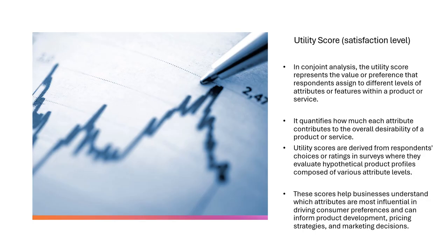We need to understand the concept of utility score. The weightage that customers have given will come out as a satisfaction level. In conjoint analysis, analysts calculate a utility score — the value of preference that a respondent has assigned to a different level of an attribute or feature within a product. It also quantifies how much each attribute contributes to the overall desirability of the product or service.